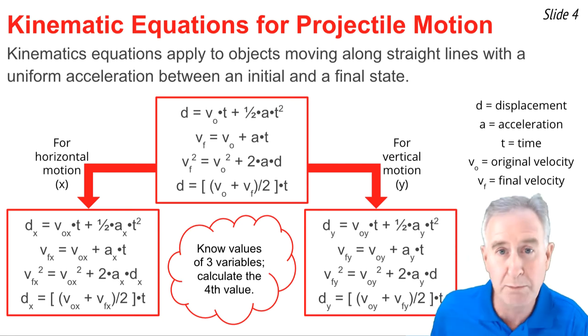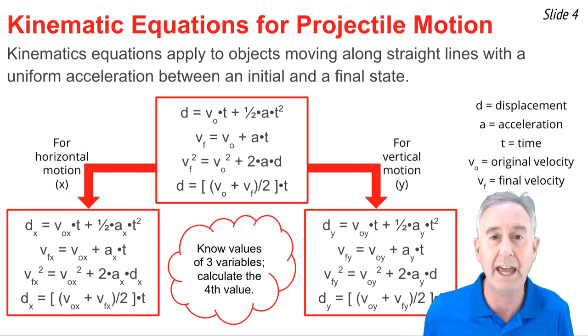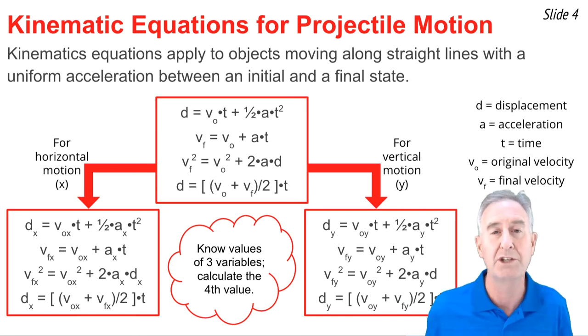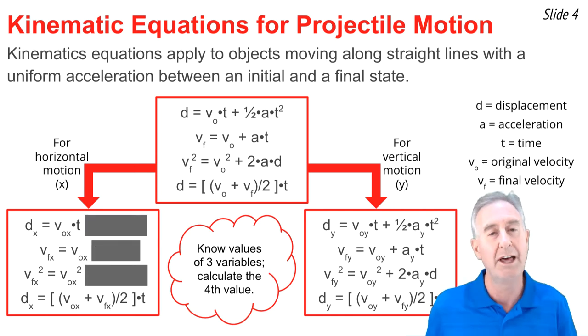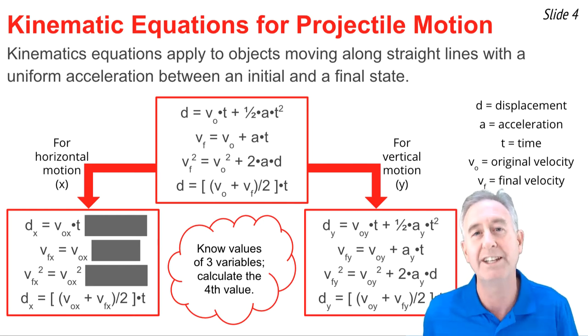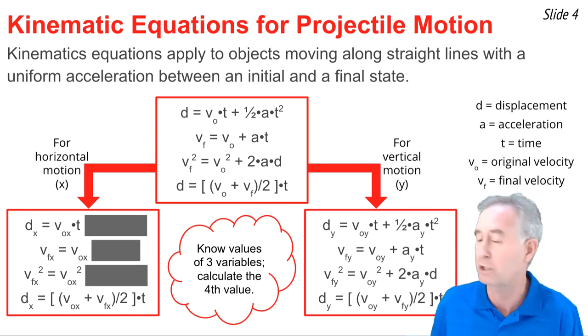Now when it comes for the x motion, what we know is that the Ax value is 0, and we see Ax in three of these formulas, so that term would cancel out. Matter of fact, the most common equation you'll use here is the top one, dx equal Vox times t.